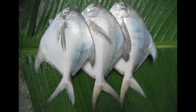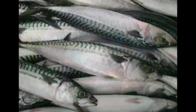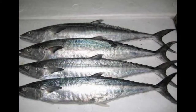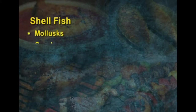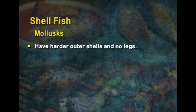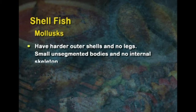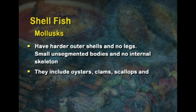Saltwater or marine fish spend their entire lives in oceanic water; examples include the white pomfret, mackerel and surmai. The second major category is shellfish, which can be classified as mollusks and crustaceans. Mollusks have harder outer shells, no legs, small unsegmented bodies and no internal skeleton. They include oysters, clams, scallops and mussels.